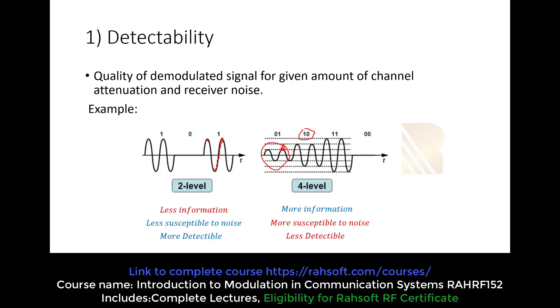So that's why we say the quality of demodulated signal for a given amount of channel attenuation and receiver noise. It means we want to see what kind of quality we can reach from our message after constructing it, after doing demodulation. That's why we call it detectability.